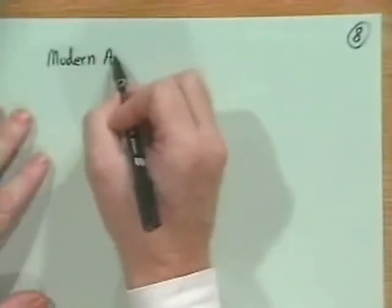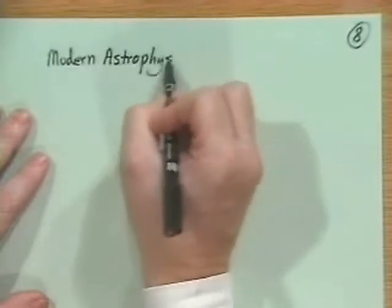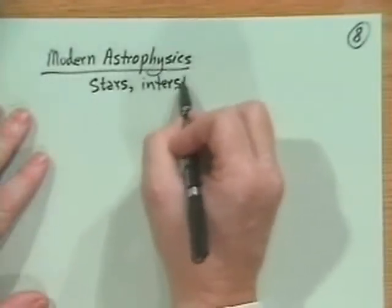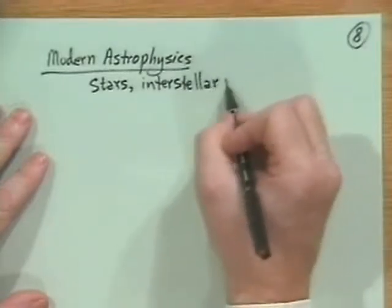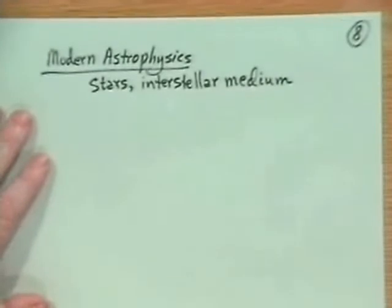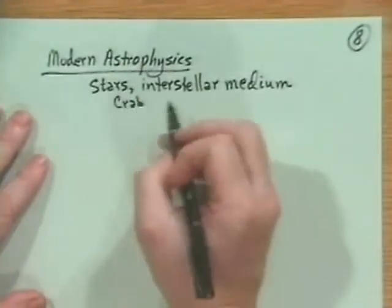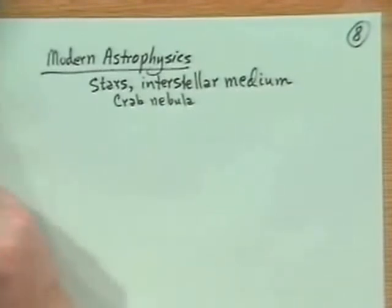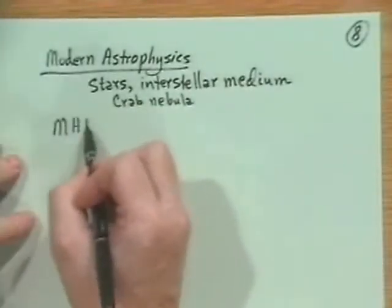I want to mention a few more applications here. An application is modern astrophysics. The sun is a stellar body and it's certainly a plasma. The stars, interstellar media. Interstellar media have only about one particle per cubic centimeter, but nonetheless, temperatures on the order of tens to hundreds of eV. Crab nebula, things like that, large scale galaxies. They have very definitely collective interactions. There's all kinds of modern astrophysical applications.